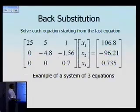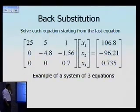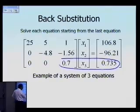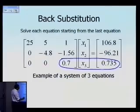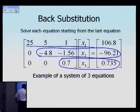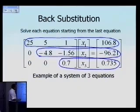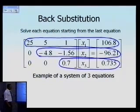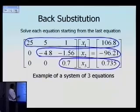Once we have the upper triangular matrix, we perform back substitution. Using the three-equation example, at the end of forward elimination you still have three equations and three unknowns, but you can solve one equation at a time. The last equation gives x3 directly. The second equation has x2 and x3, but x3 is already known, so there's only one unknown. The first equation similarly reduces to one unknown once x2 and x3 are found.